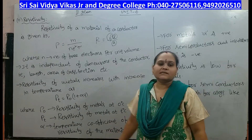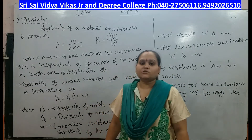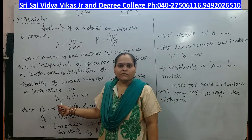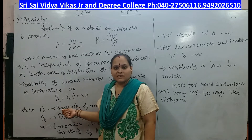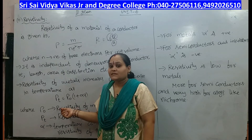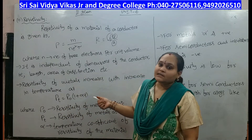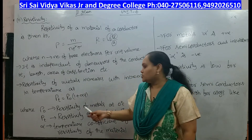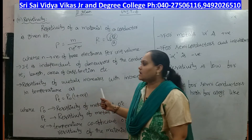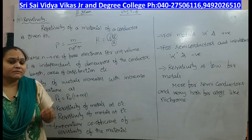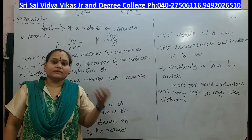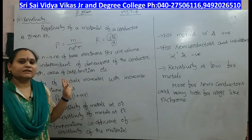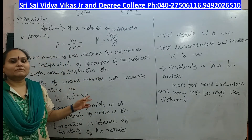Resistivity of metals increases with increase in temperature — it depends only on temperature. The formula is rho_T equal to rho naught multiplied by 1 plus alpha T, where rho_T is the resistivity at temperature T degrees centigrade and rho naught is the resistivity at 0 degrees centigrade.